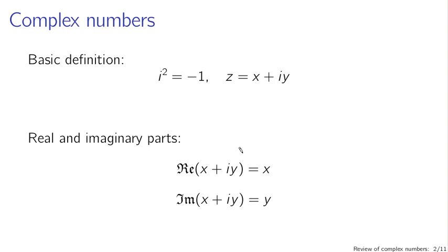First of all, there's the basic definition: i squared is equal to negative one, which you can think of also as i equals the square root of negative one.